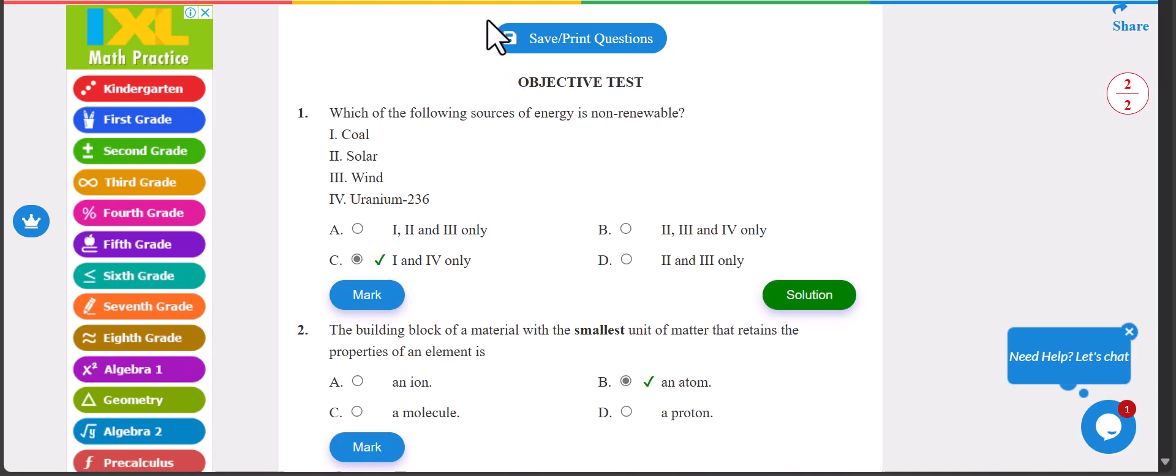Okay, let's get started. Number one: which of the following sources of energy is non-renewable? We have coal, solar, wind, and uranium (236). The answer is C, which is I and IV only - coal and uranium (236). All the answers will be provided in the description below.